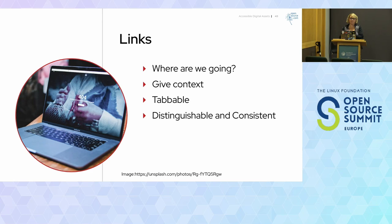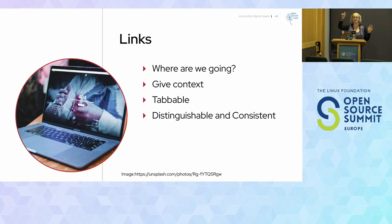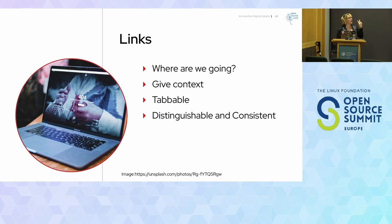Links should not be identified by color alone. Think about someone who is low vision with a page of black text and a green link — they might not be able to differentiate that link when it's only color alone. We have special rules about this: if your link is not underlined, you should have two distinguishable factors, and one should be a non-color component like bold, italic, or underline.